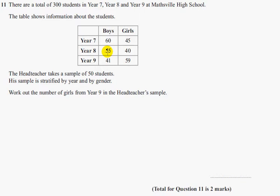You've got your boys and your girls. In Year 7 there are 60 boys and 45 girls. In Year 8 there are 55 boys and 40 girls. In Year 9 there are 41 boys and 59 girls.